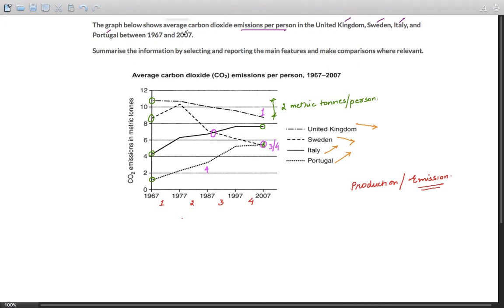Between 1967 and 2007 these are the number of years. So these are four decades.